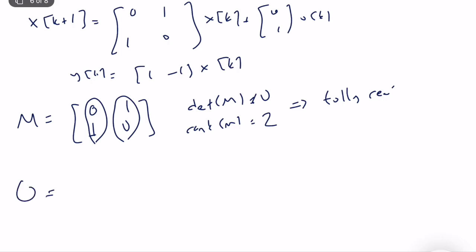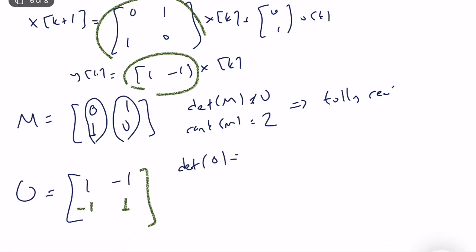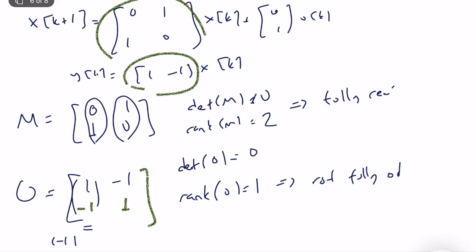Now let's construct the observability matrix. We start with C = [1, -1] and then C·G, which gives [-1, 1]. So the observability matrix O is [[1,-1],[-1,1]]. The determinant of O is zero. Looking at the rank: the second row is just the first multiplied by -1, so they are linearly dependent. The rank of O is 1, which means the system is not fully observable.